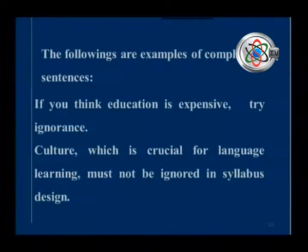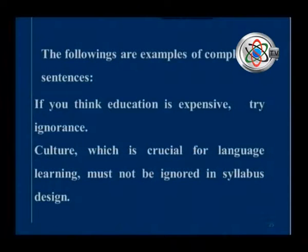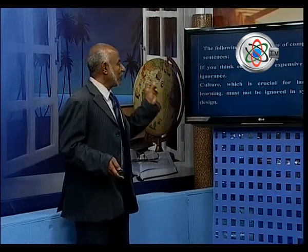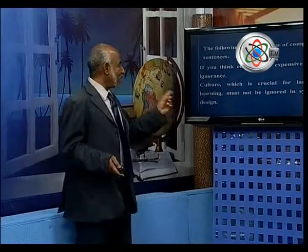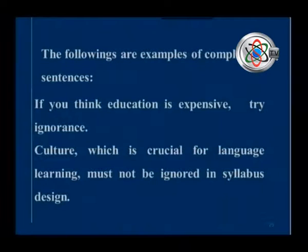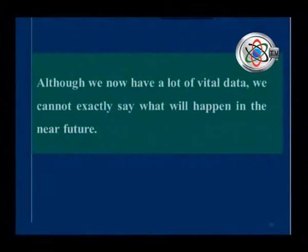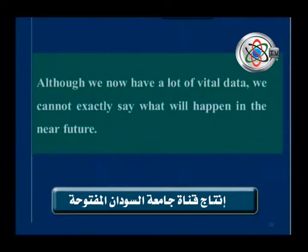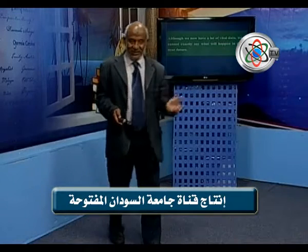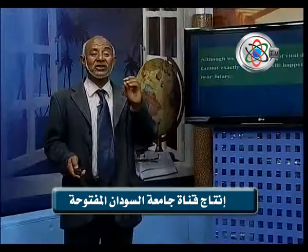The following are examples of complex sentences. 'If you think education is expensive, try ignorance' — 'if you think education is expensive' is the main clause, and 'try ignorance' is the subordinate clause; they must go together. 'Culture, which is crucial for language learning, must not be ignored in syllabus design' — this has a main clause and a subordinate clause. 'Although we now have a lot of vital data, we cannot exactly say what will happen in the future' — no one can tell the future.